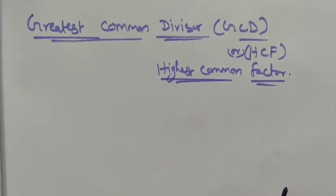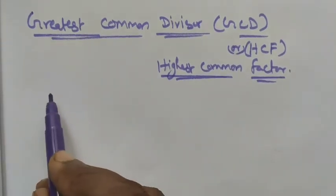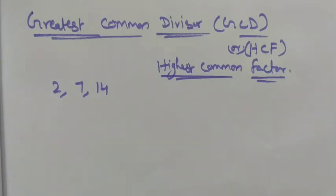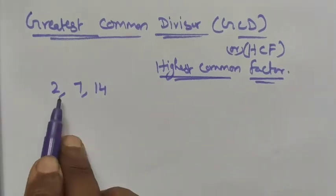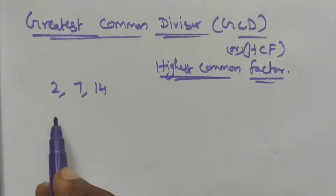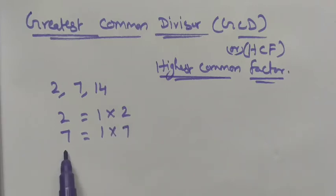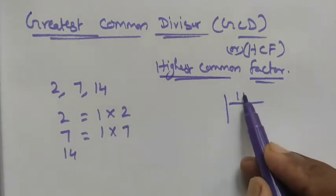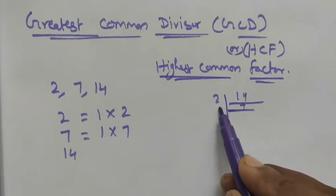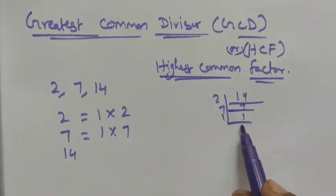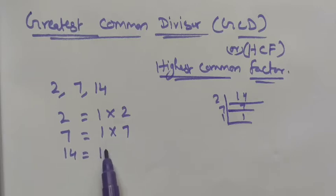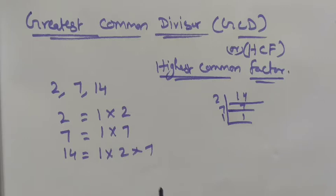Both GCD and HCF are the same. Let me start from numbers — let me take 2, 7, and 14. First we want to find out the factors of each number. 2 has factors 1 and 2; 7 has factors 1 and 7; and 14 has factors 1, 2, 7, and 14 — which is 1 × 2 × 7.